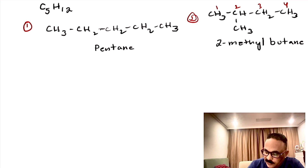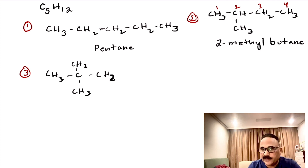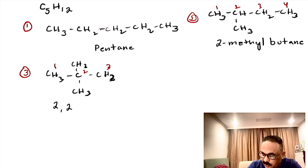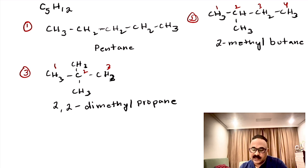Let us draw another one, number 3: a central carbon with CH3 on top, CH3 on the bottom, CH3 on one side, and CH3 on the other side. We can see that both sides we have a methyl group. Numbering it 1, 2, 3 — both methyl groups are attached to the second carbon, so we name it 2,2-dimethylpropane. These are 3 isomers of C5H12.